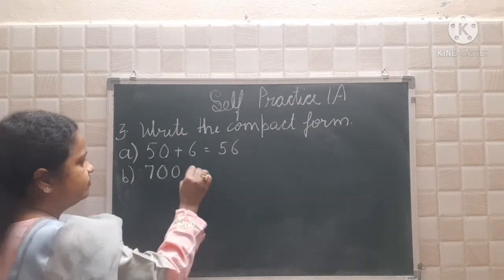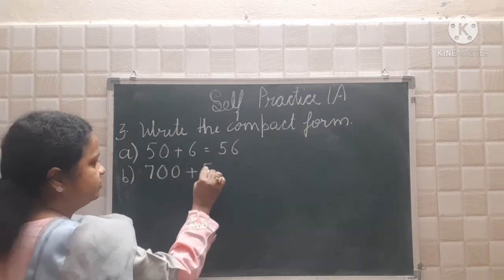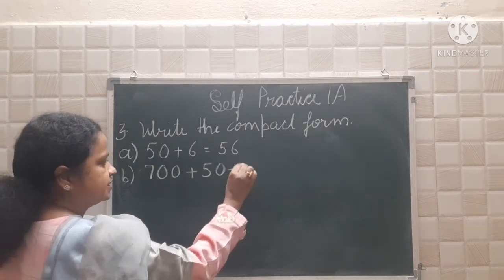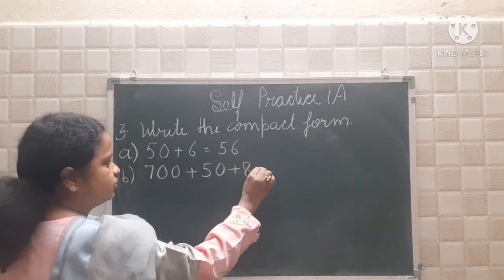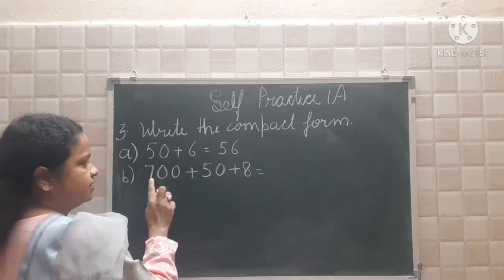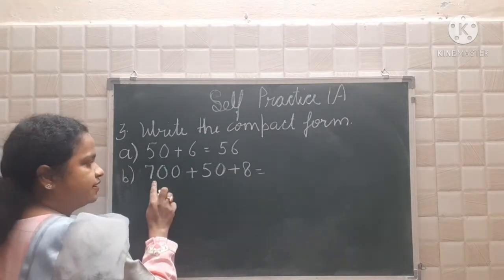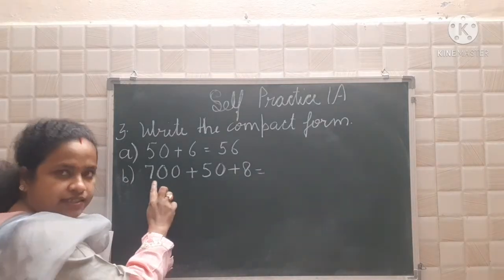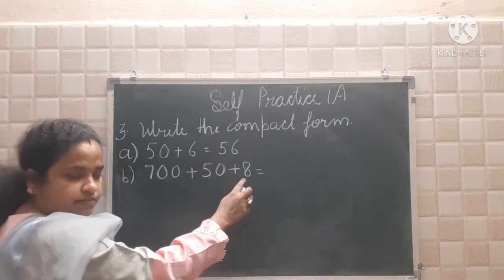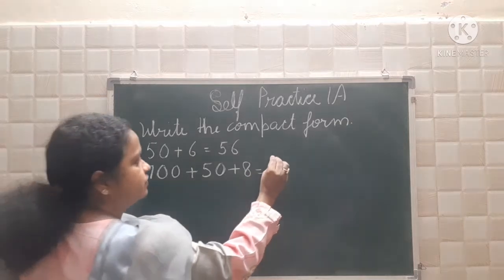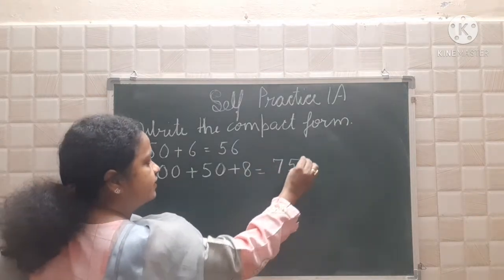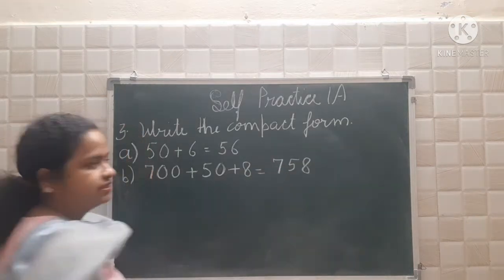See the second one: 700 plus 50 plus 8. What will you get? See — 7 is at the hundreds place, 5 is at the tens place, and 8 is at the ones place. So you will get 758.